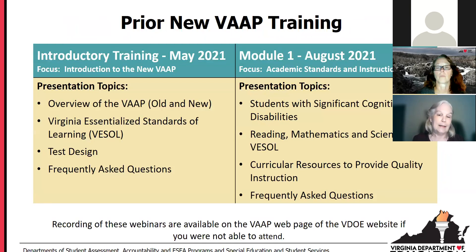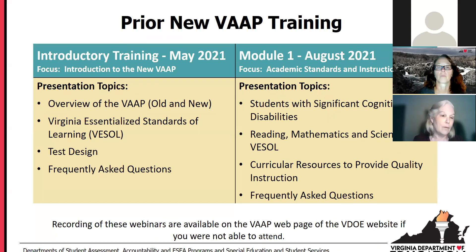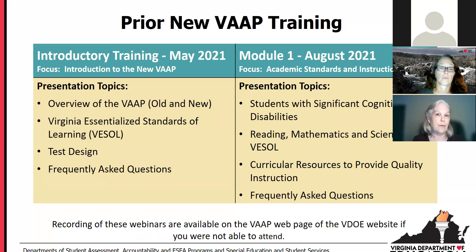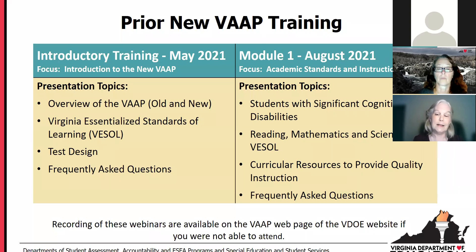We have already provided quite a bit of training on VAP. We knew that the assessment was going to be really different, and so we began providing training last May. That was an introductory training to provide an overview of what the old VAP looked like, talk about the new VAP, and introduce the concept of the Virginia Essentialized Standards of Learning. The VESOLs are based on the Standards of Learning, but we followed a process of essentializing them to create standards that are appropriate and accessible for students with significant cognitive disabilities.